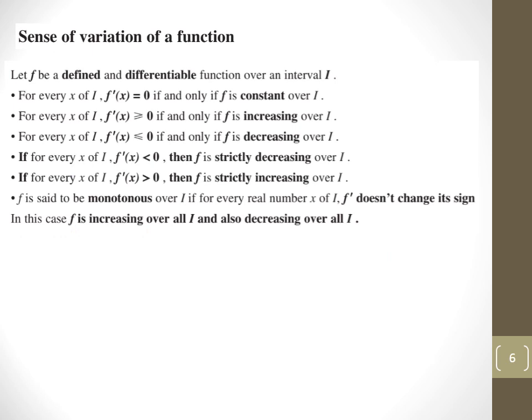Now, the sense of variation of a function. If the function is defined and differentiable over an interval i: if the derivative equals 0, then f is constant; if the derivative is positive, the function is increasing; if the derivative is negative, the function is decreasing; and if it's strictly negative, the function is strictly decreasing. We say f is monotonous over i if f-prime doesn't change its sign — meaning the function is either increasing or decreasing throughout the entire interval.